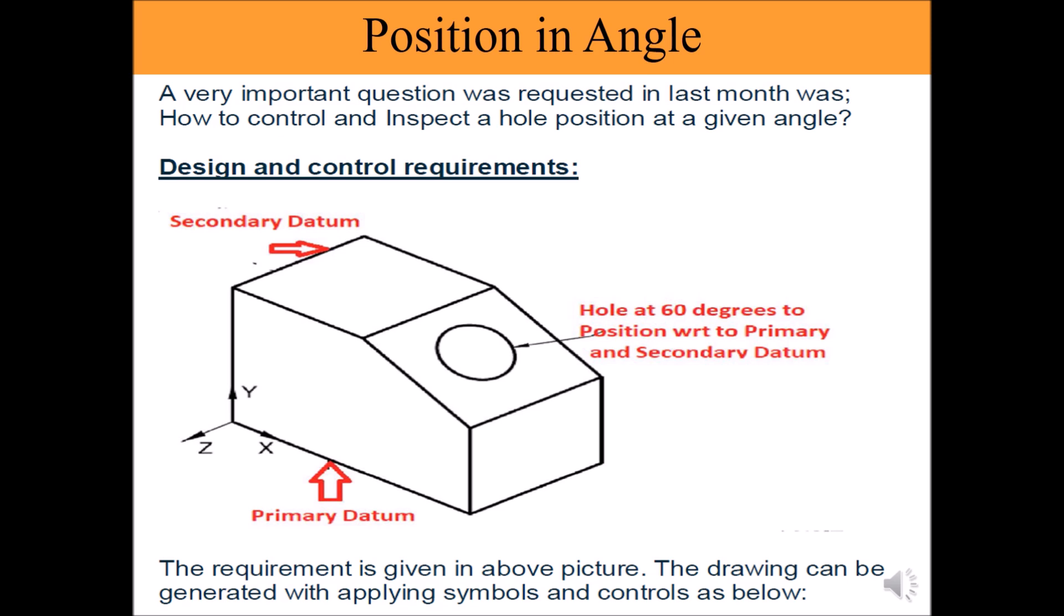If this hole is to be positioned with cylindrical tolerance zone from the intersecting point shown, then specifications to be represented along with applying feature control frame, datums and basic dimensions. In the next slide we will discuss how to apply all necessary GD&T symbols in the drawing.